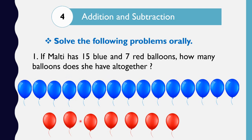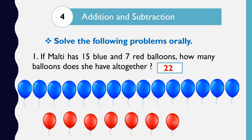These are the 15 blue balloons and 7 red balloons. Let's count: 15 blue — 16, 17, 18, 19, 20, 21 and 22. So the answer is 22. Here we have done addition: 15 plus 7, the answer is 22.